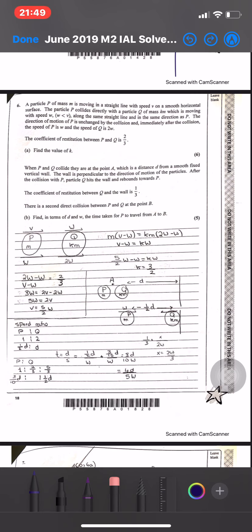The direction of motion of P is unchanged and immediately after the collision, the speed of P is W and the speed of Q is 2W. So P mass M was moving with speed V, Q mass KM was moving with speed W. After collision, P was moving with speed W and Q was moving with speed 2W.